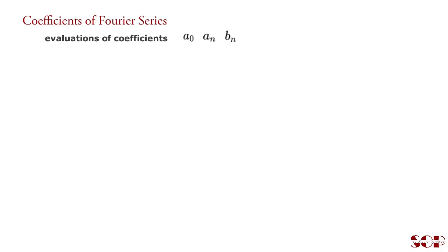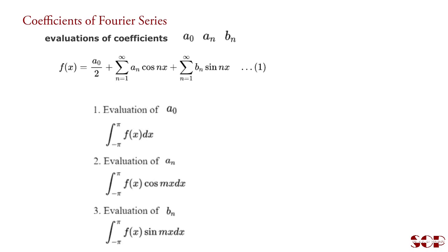To evaluate the coefficients a₀, aₙ and bₙ, we make three processes. One: integrate the Fourier series from minus pi to pi with respect to x. Second: multiply the series by cos(mx) and then take integration from minus pi to pi with respect to x. Third: multiply the series by sin(mx) and then integrate it from minus pi to pi with respect to x.